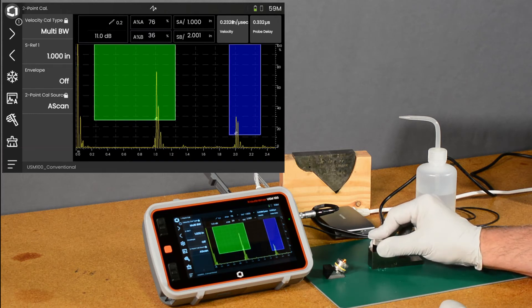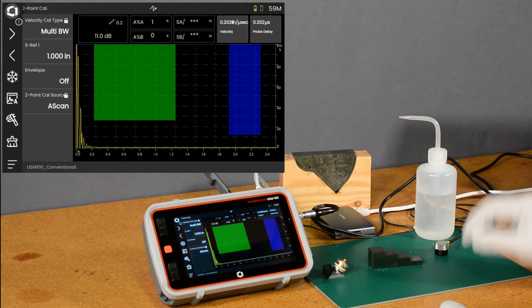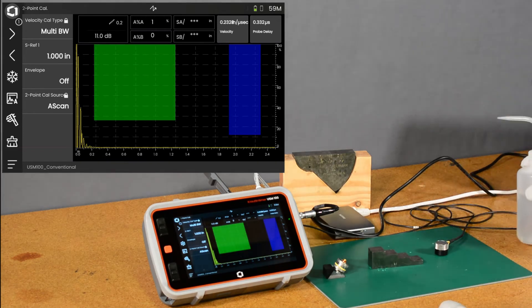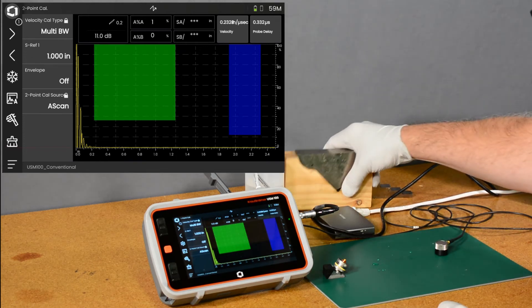So our delay and velocity calibration completed as we expected. Okay. Now let's switch over here, and let's take a look at an angle beam calibration.